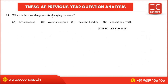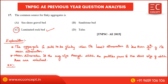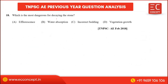Next question: which is the most dangerous cause for decaying stone? The options are efflorescence, water absorption, incorrect bedding, and vegetation growth. The answer is incorrect bedding.